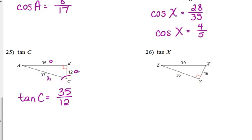26, tangent of X. 39 is the hypotenuse. The adjacent is 15, 36 is the opposite, so the tangent of X is the opposite over the adjacent. Those are both divisible by 3. 12 over 5.